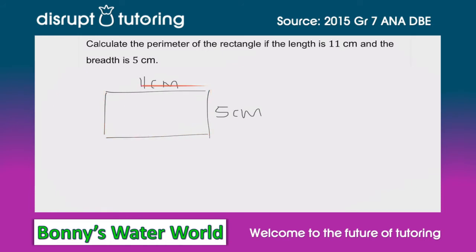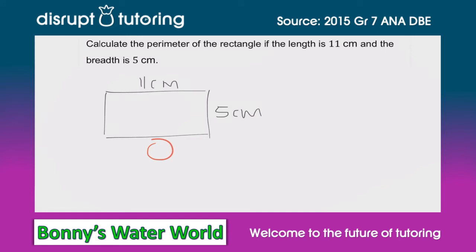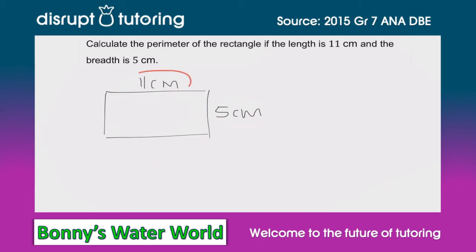To do that, we need to know what all four sides equal. You may have noticed that we only have the values for one pair of sides — we don't know what the other two are yet. But we know that in a rectangle, the opposite sides are the same length.